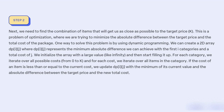One way to solve this problem is by using dynamic programming. We can create a 2D array dp[i][j], where dp[i][j] represents the minimum absolute difference we can achieve with the first i categories and a total cost of j.